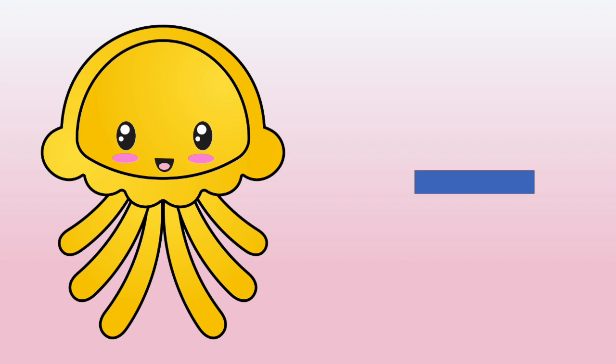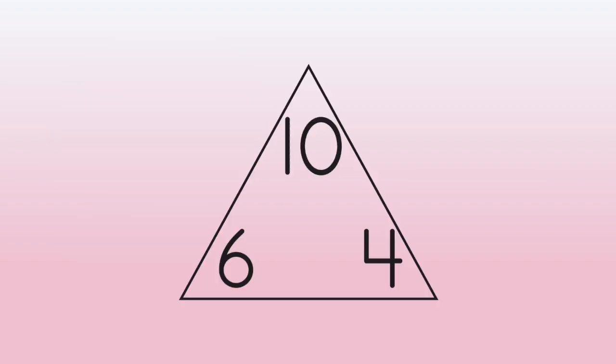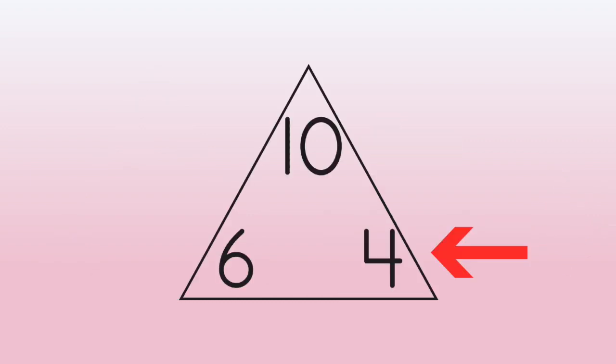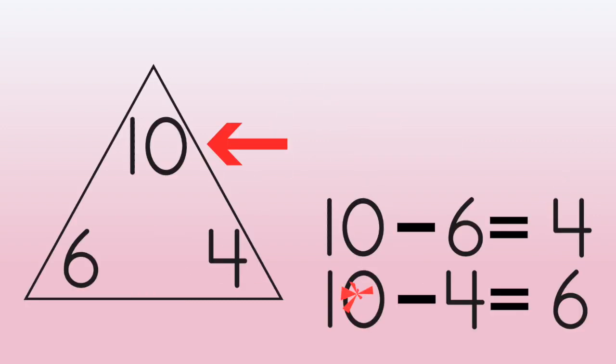Next, she tried subtraction. Start at the top, go down and over. 10 minus 6 equals 4. And go down the other way. 10 minus 4 equals 6.